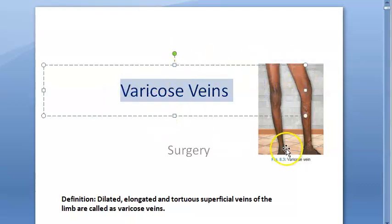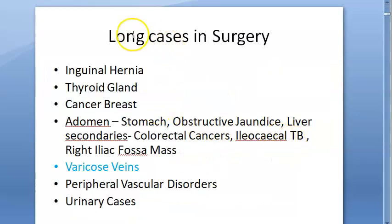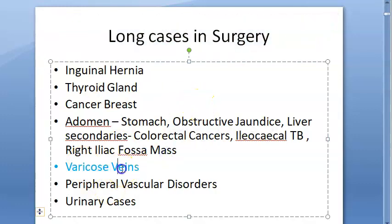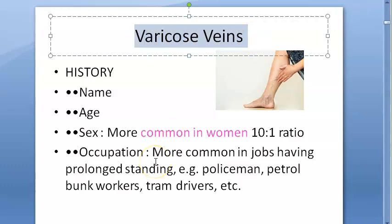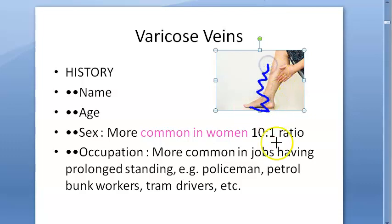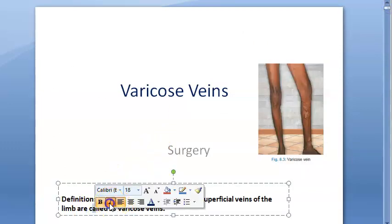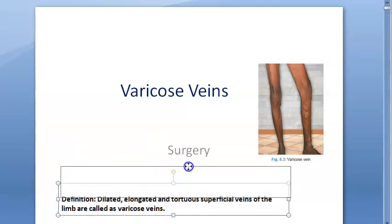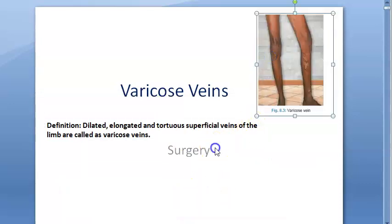In this video we want to look at varicose veins — a very important topic in surgery and clinical presentations, especially in long cases. Basically, varicose veins happen because the veins have to drain against gravity, and the valves can be absent, incompetent, or weak, causing pooling of blood. Dilated, elongated, tortuous superficial veins of the limbs are called varicose veins.